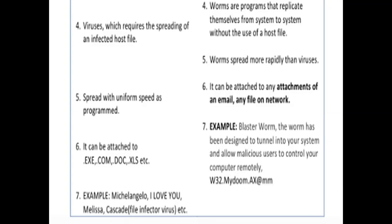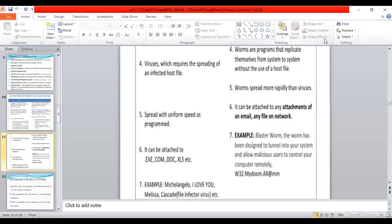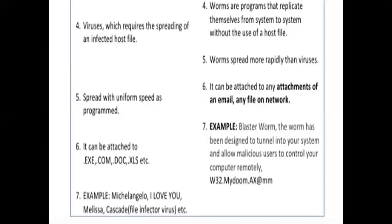Worms can also be avoided by scanning email attachments before downloading them. If you open a Gmail with an attachment and hover your cursor over it, the internet or Google will automatically scan that file attachment. After scanning, it will show the download option. If that particular attachment is affected with a virus, it will show a virus warning — there is no download button, and it will show a risk symbol instead. This is the difference between worms and viruses, and steps to control them.